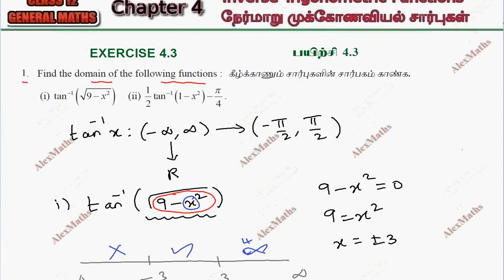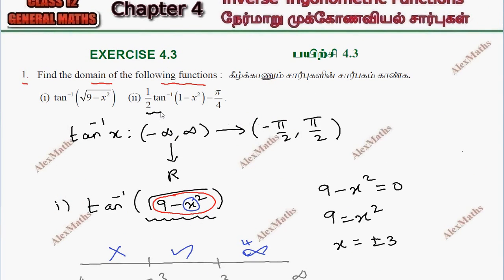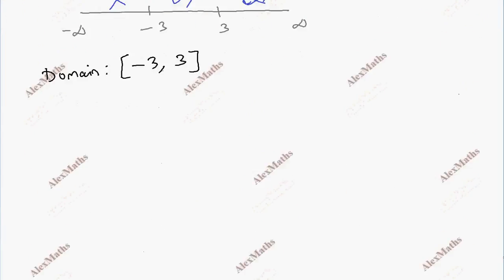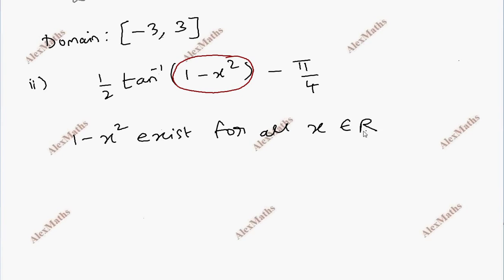Subdivision 2: half tan inverse 1 minus x square minus pi by 4. 1 minus x square exists for all x belonging to R. Therefore domain equals R.